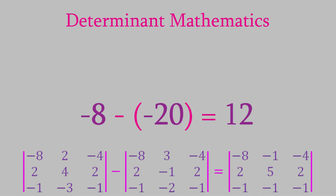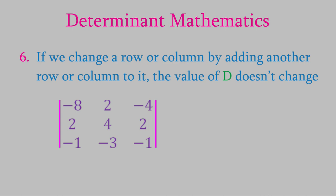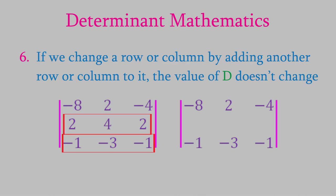The sixth and final rule is perhaps the most useful one. This rule tells us that if we change a determinant by taking one of the rows or columns and adding it to another row or column, the value of the determinant doesn't change. For example, we know this determinant is equal to negative 8. If we change the second row by adding the third row to it, the new second row becomes one, one, and one. Calculating the value of this new determinant, we find it's still equal to negative 8.